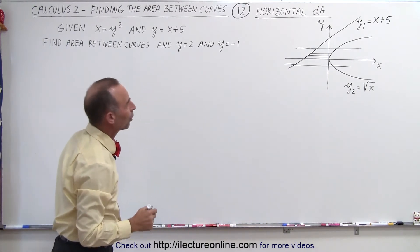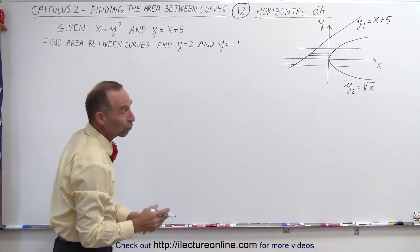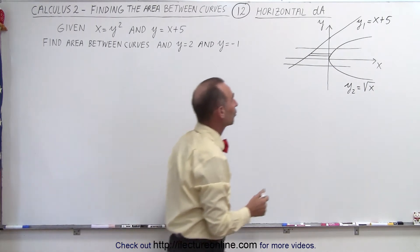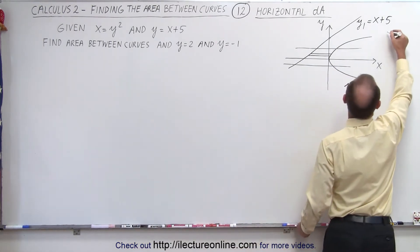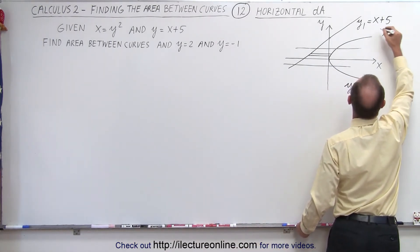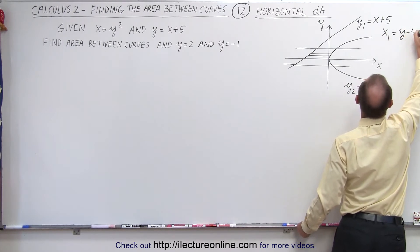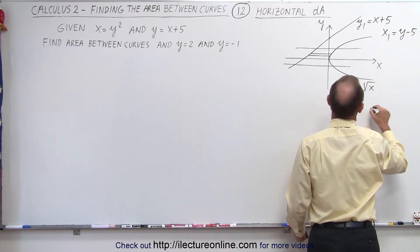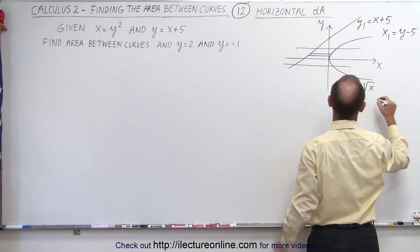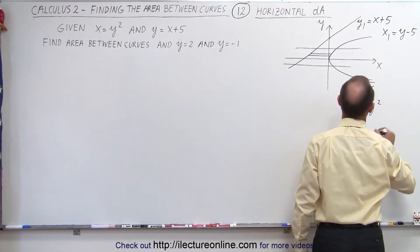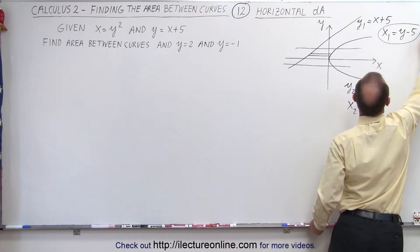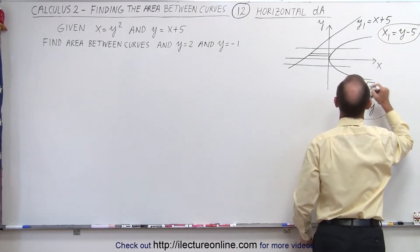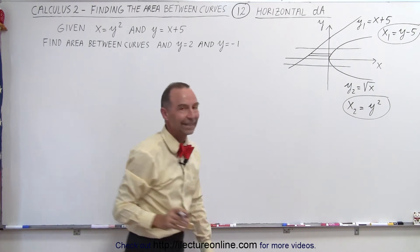Then you can see we have both of those functions defined in terms of y. If you wanted to define them in terms of x, we can say that x1 is equal to y minus 5, and here we can say that x2 is equal to y squared. And I believe we probably want to use these two representations of the two curves to find the area.